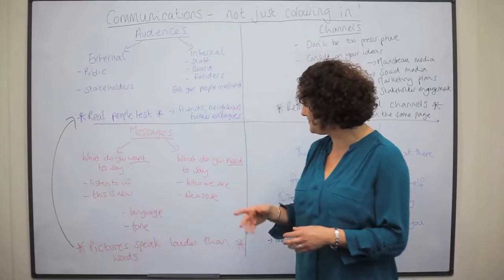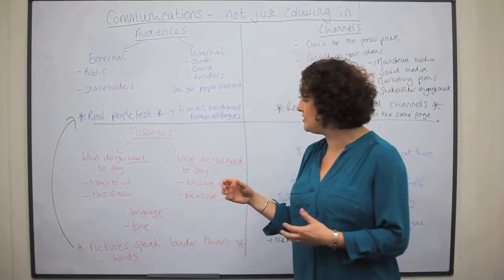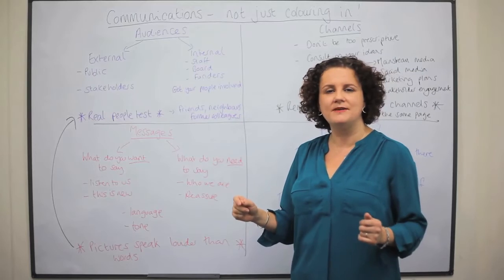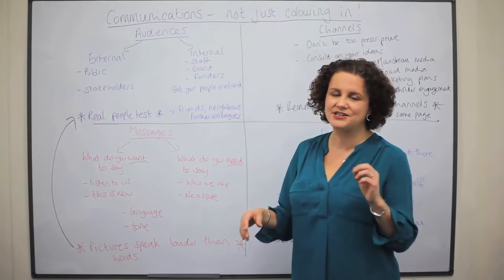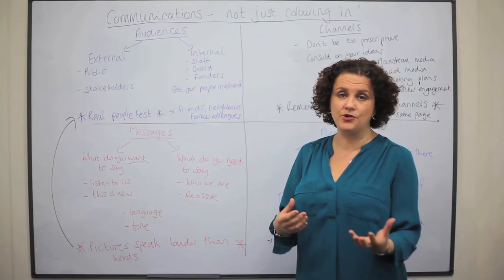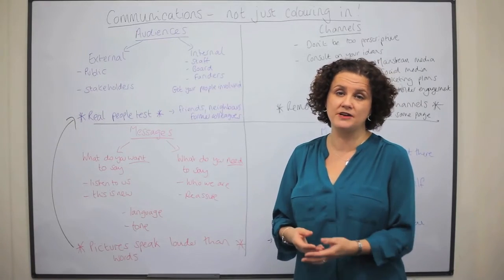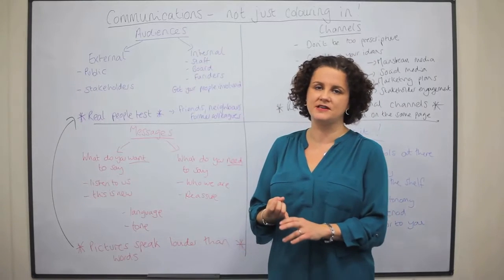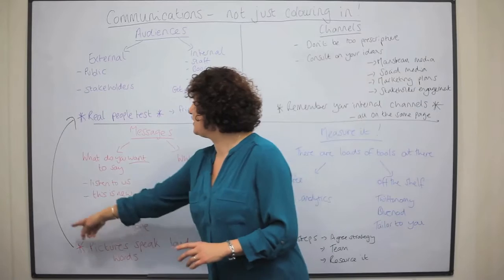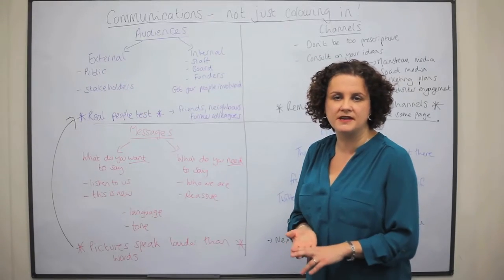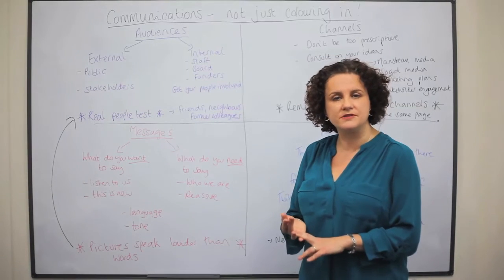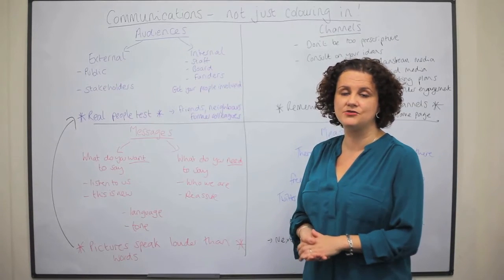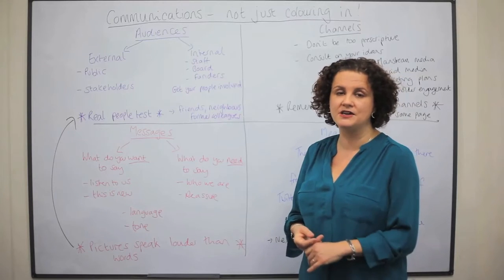The second stage is your messages. You need to think about what you want to say, but you also need to think about what you need to say. Most organisations will want to say, listen to us, we've got this great new thing — but you might actually need to say who you are, what your organisation is about and what you stand for. You might need to reassure people that you're an organisation that needs to be taken seriously. Think about your language and your tone, apply your real people test. And the golden rule: you must always think about what pictures are going to get your messages across, because pictures speak louder than words. For every message to reach your audience effectively, you need a visual image to get that across.